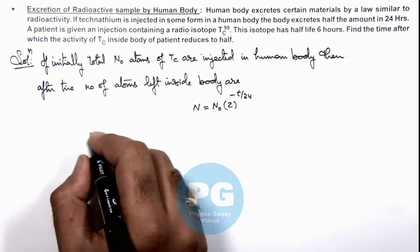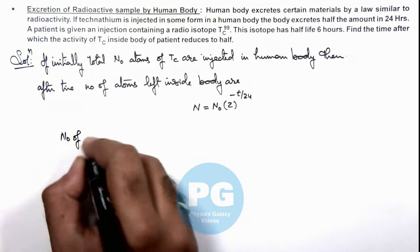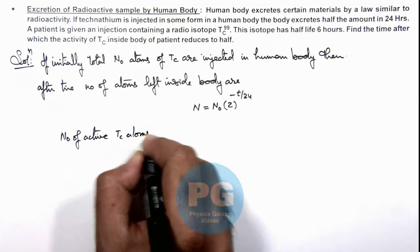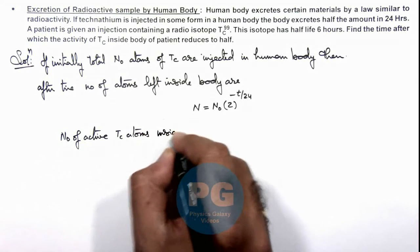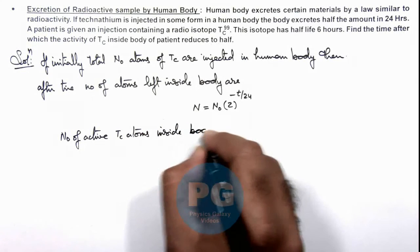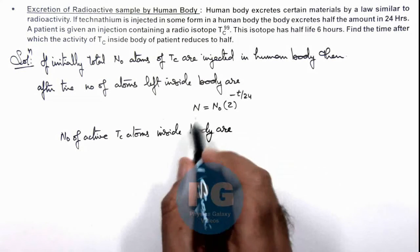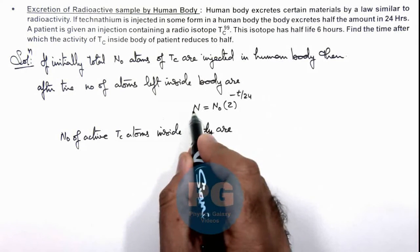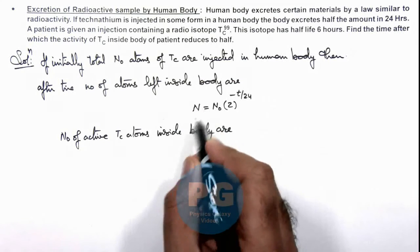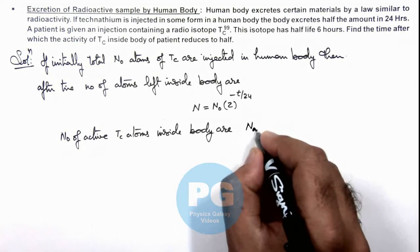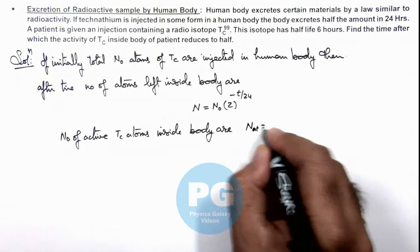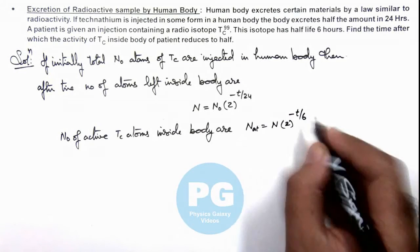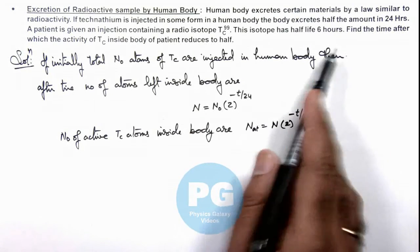Now we can calculate the number of active TC atoms inside body. Here we can consider if total atoms inside body are N, and at t = 0 out of these N we wish to calculate how many active atoms are there. We can write N_active = N × 2^(-t/6), because 6 hours is the half-life of this isotope.